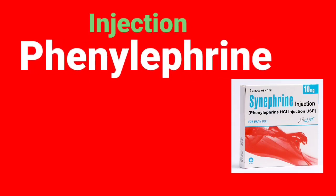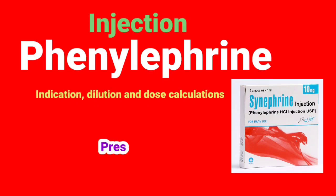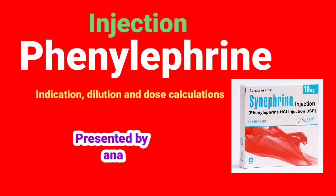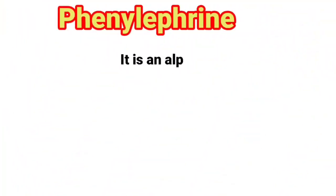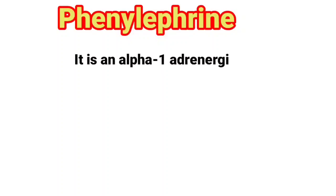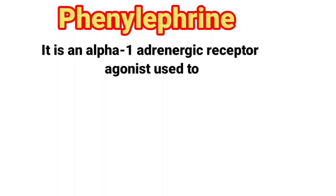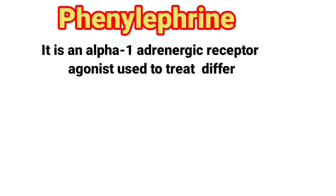Injection Phenylephrine: its indications, dilution, and dose calculations. Presented by Anesthesia with Babur. Let's start our presentation. Phenylephrine is an alpha-1 adrenergic receptor agonist, used to treat different conditions.